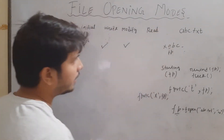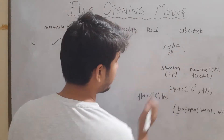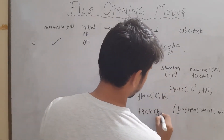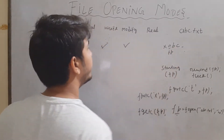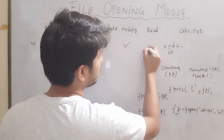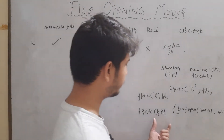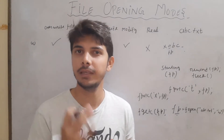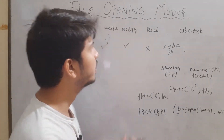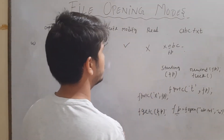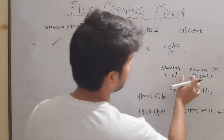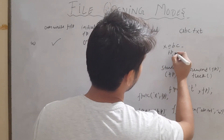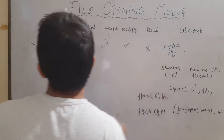Now for reading in 'w' mode: if I bring the file pointer to a location and perform fgetc(fp), reading of a character is not possible. If you try this operation you will see some gibberish characters. So the read operation is not allowed in 'w' mode.